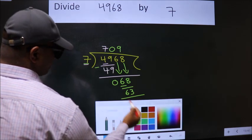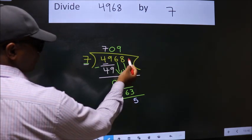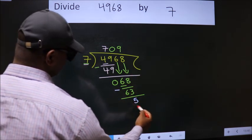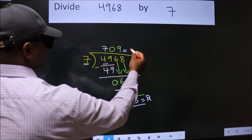Now we subtract. We get 5. No more numbers to bring down, so we stop here. This is our remainder. This is our quotient.